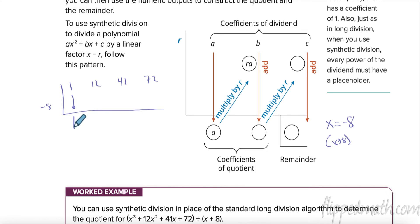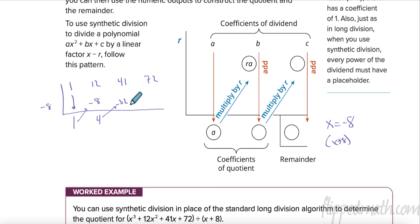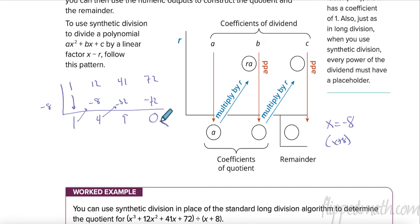Here's what we do: bring straight down — one plus nothing is one. Then multiply: negative 8 times 1 is negative 8. Add down: 12 plus negative 8 is 4. Multiply: negative 8 times 4 is negative 32. Add down: 41 minus 32 is 9. Then negative 8 times 9 is negative 72, and that gives zero.